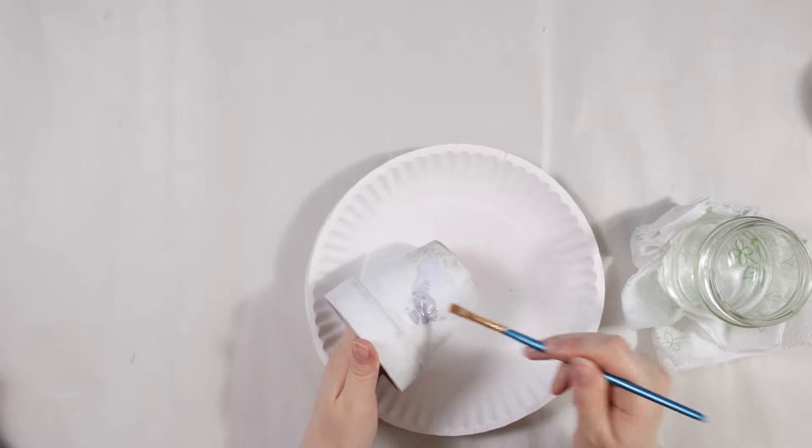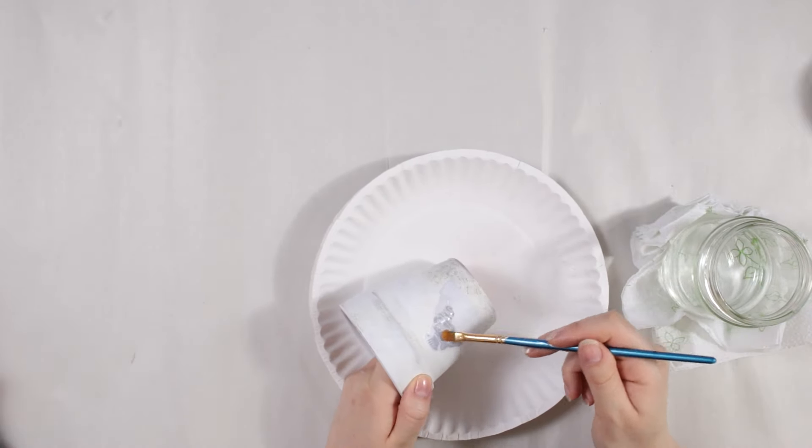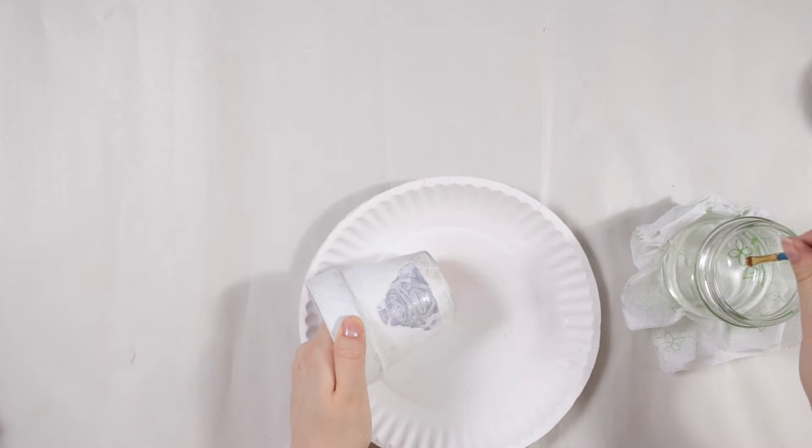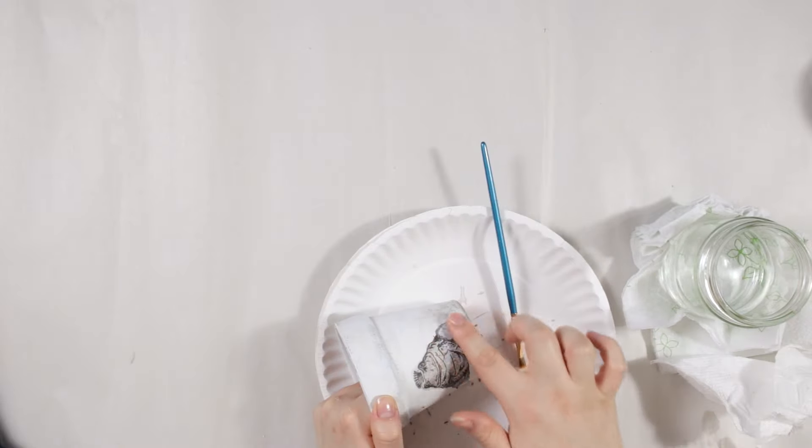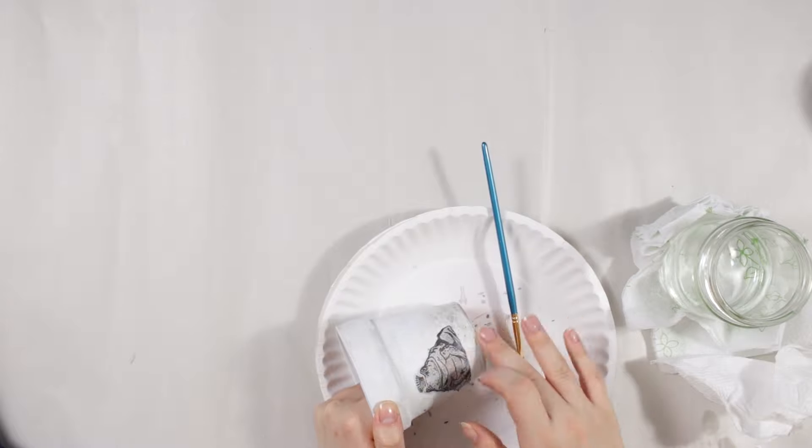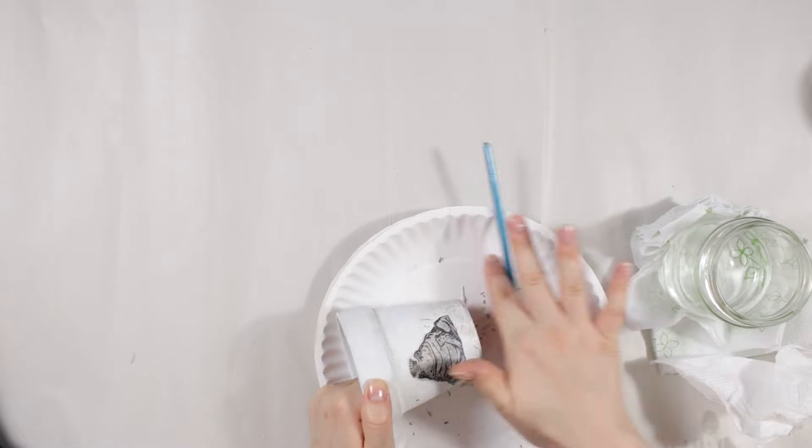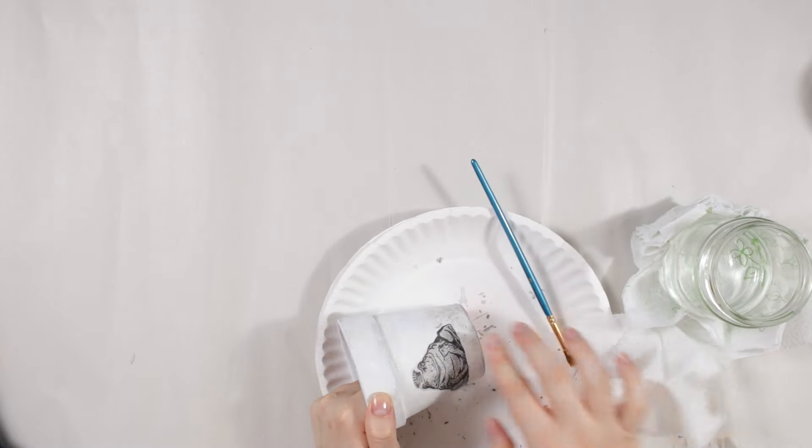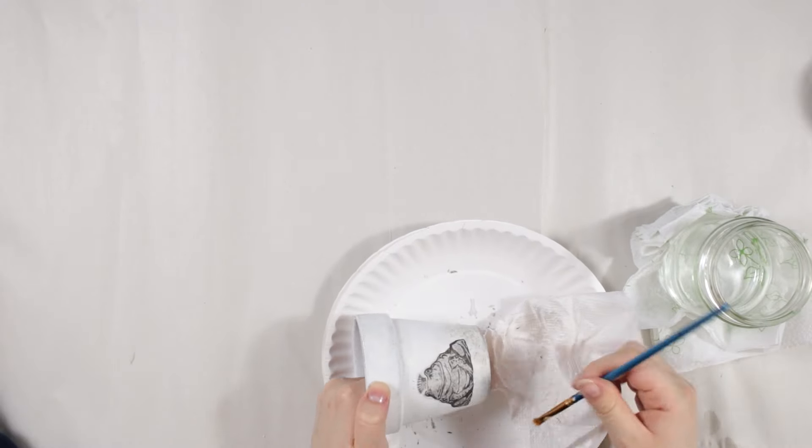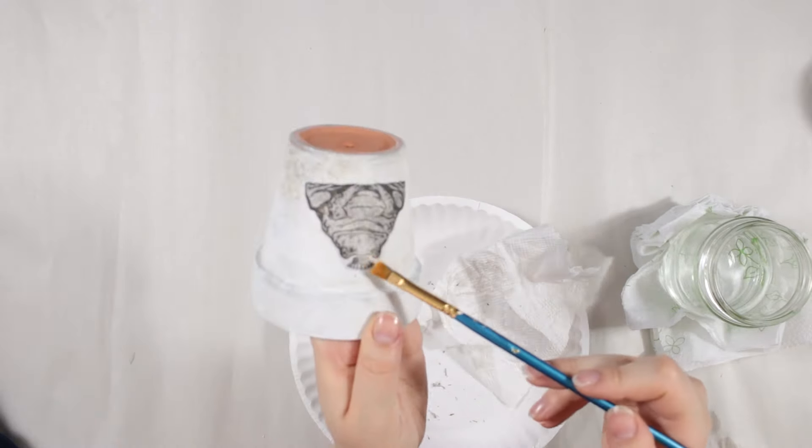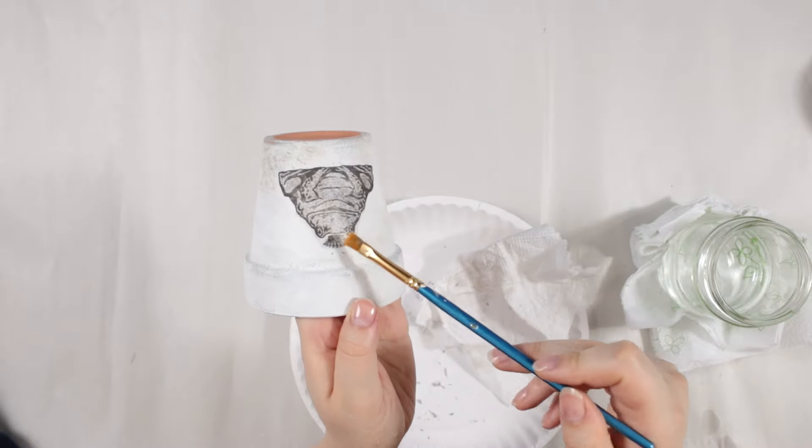After allowing it to dry for one hour, I'm going to now be using water and I'm going to be applying it to the design to saturate the paper. Then I'm going to be using my finger to rub off the excess paper leaving behind just the ink transfer. And look at that. Our little frog print turned out pretty cute.